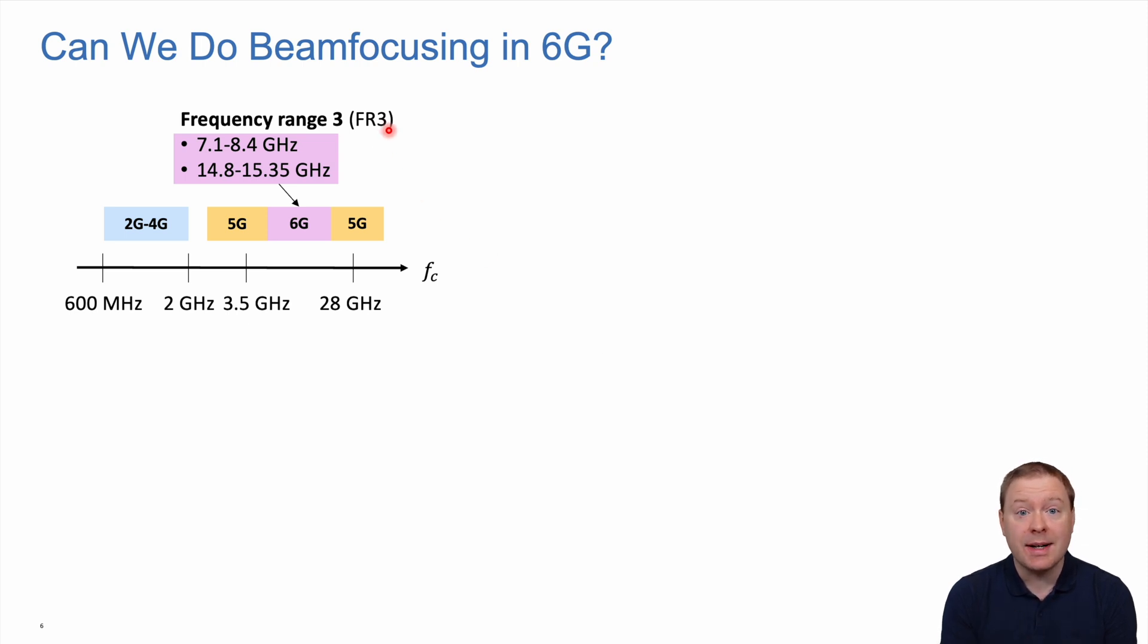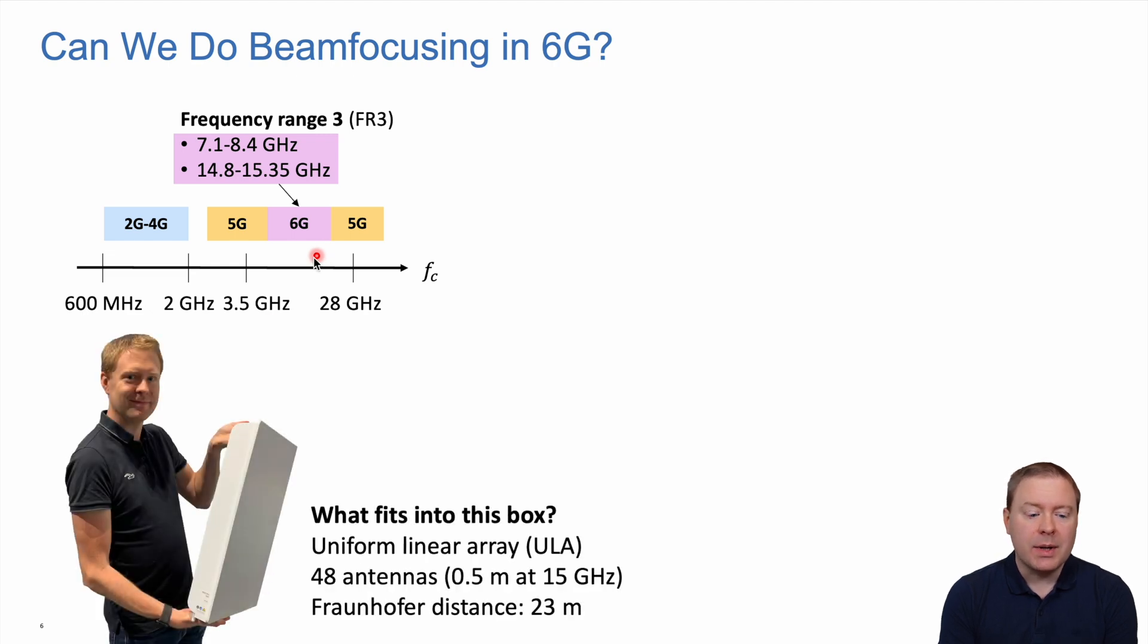The main question is, will we see beam focusing in 6G? 6G is expected to operate in frequency range 3 between 7 and 24 gigahertz, a new range between mid-band 5G and millimeter wave 5G. Base stations will likely keep similar physical form factors. At 15 gigahertz, we can fit 48 antennas in a box of half a meter width with a Fraunhofer distance of 23 meters, divided by 10 gives only a few meters.